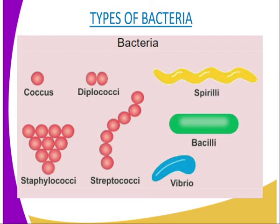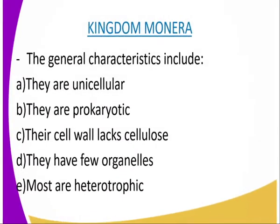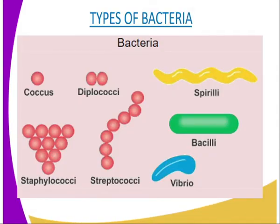We can now have the general characteristics of kingdom Monera. One major characteristic is that they are unicellular and microscopic organisms. What I mean by them being unicellular is that they are made up of a single cell — some are single celled while others are colonial. They have varied body shapes as you can see from our diagram on screen. The second general characteristic is that the nuclear material is not enclosed within a nuclear membrane, hence they are said to be prokaryotic.